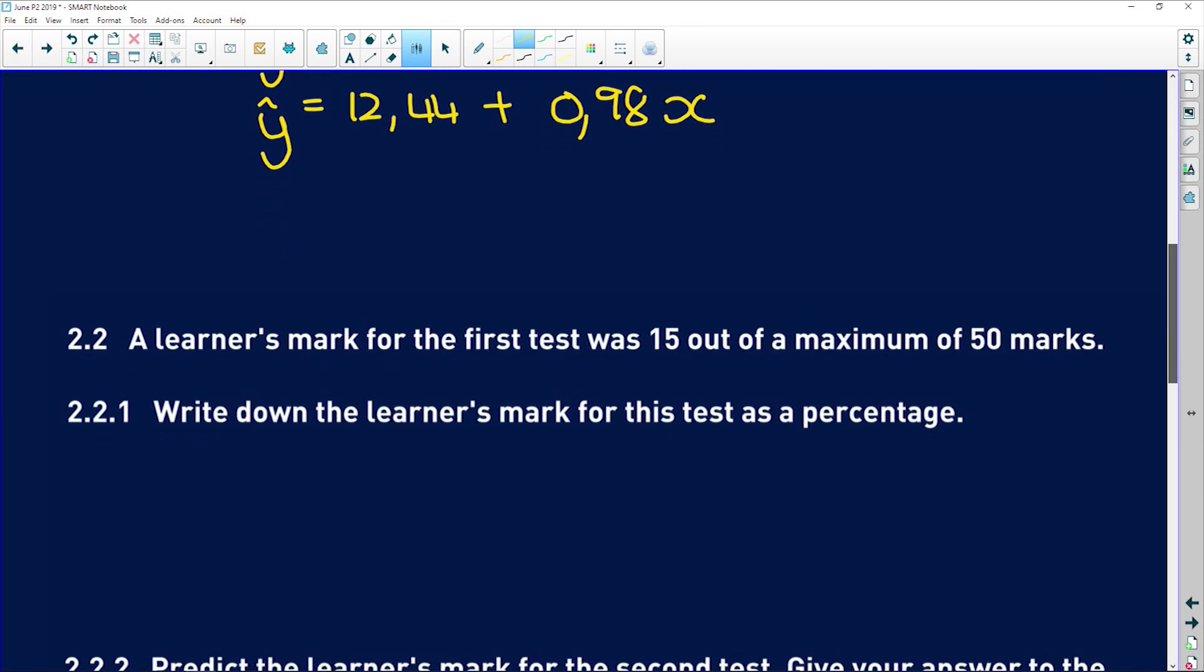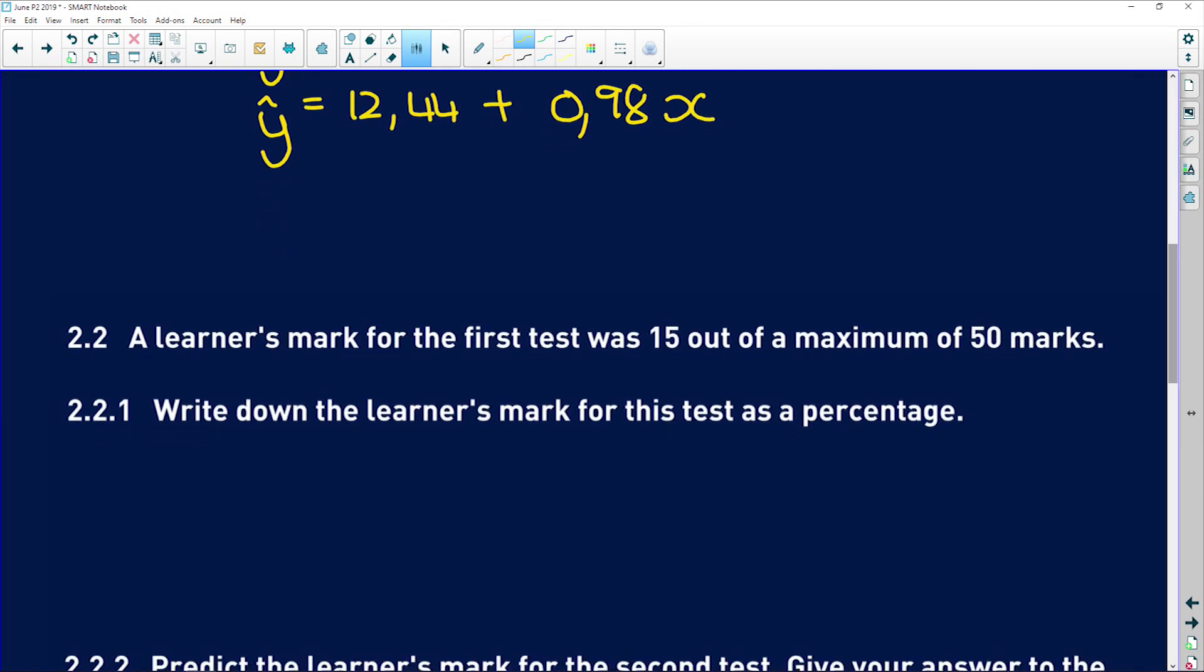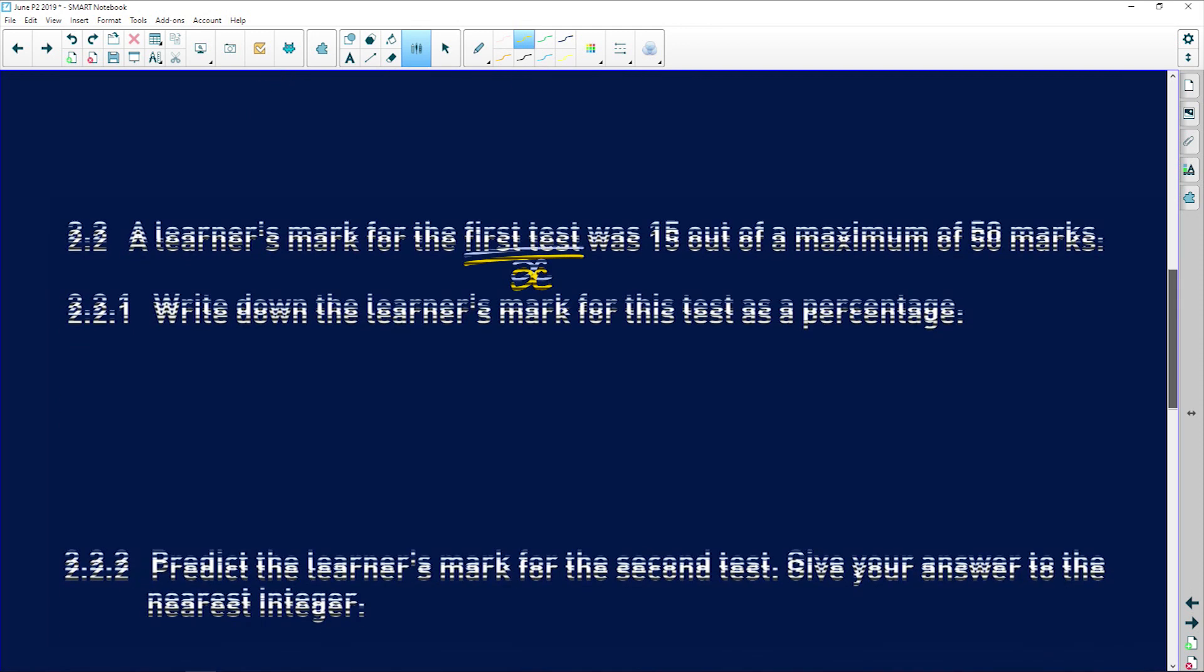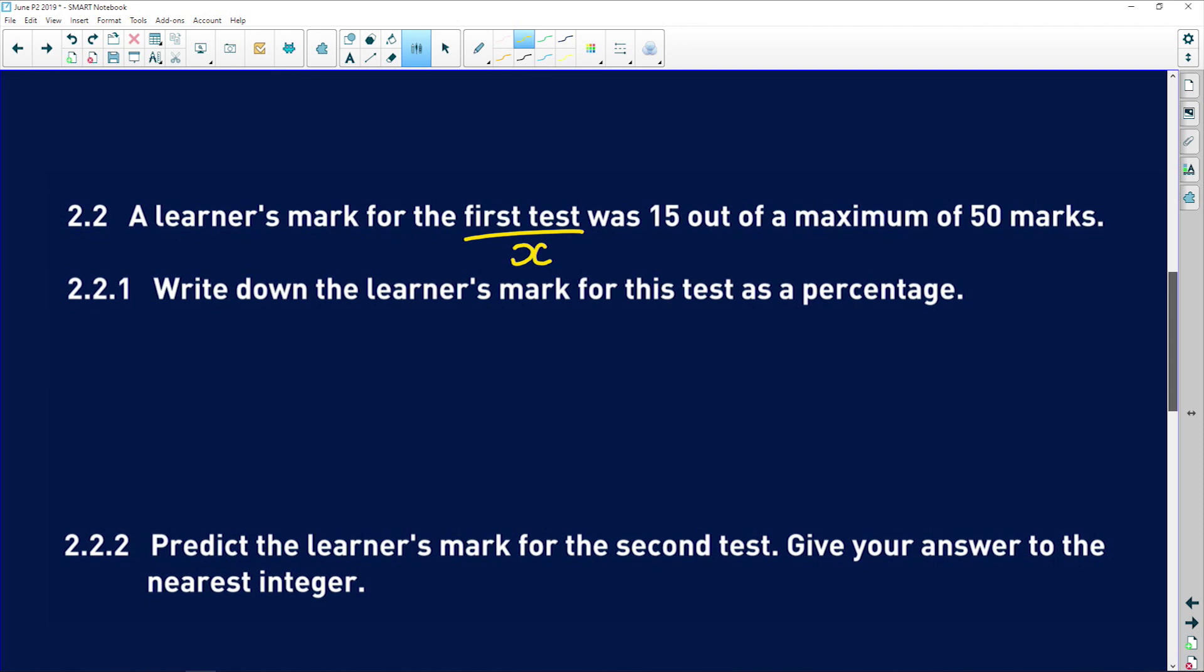So 2.2 says a learner's mark for the first test, which is x, was 15 out of a maximum of 50 marks. 2.2.1 says write down the learner's mark as a percentage. You've all worked out a percentage for a test. You take your mark that you got out of the total for the test, and you times by 100. And that is going to give us 30%.